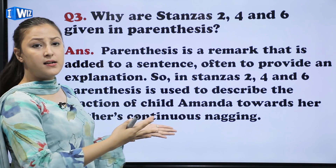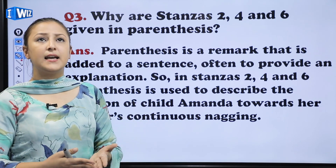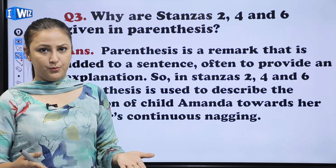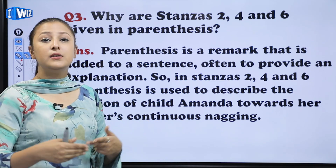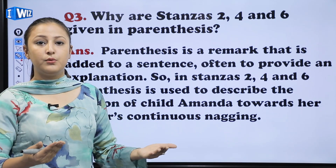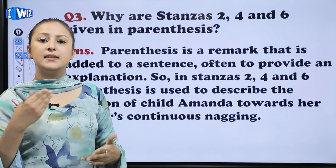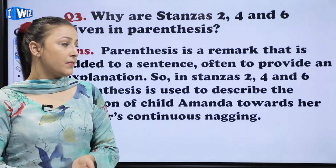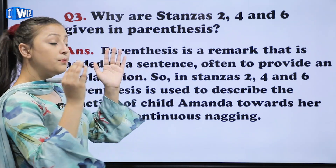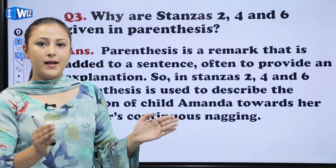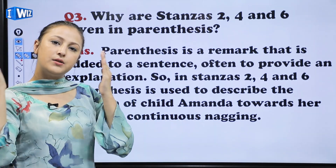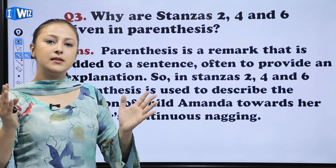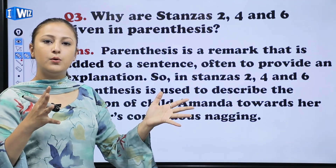In the first stanza she says she is an orphan; in the second she says she is a mermaid; then she says she is Rapunzel. These bracketed stanzas show Amanda's inner thoughts — she is given instructions by her mother, but still she is lost in another world.